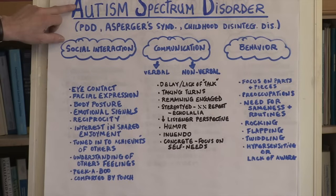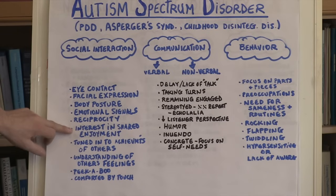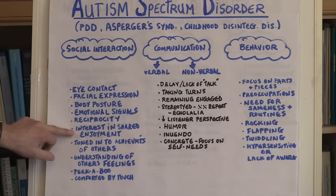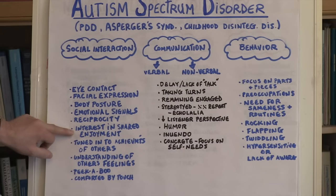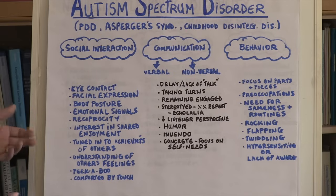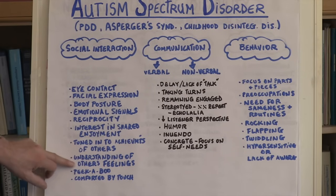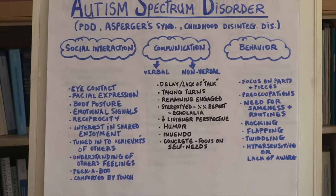Those who have autism also seem not to have a shared interest in or enjoyment with others. Their experience is a very personal, introspective, solo kind of enjoyment that they take in the kinds of ways that they behave socially. They are not at all tuned into, or have difficulty tuning into, the achievements of others. They have difficulty understanding other people's feelings.